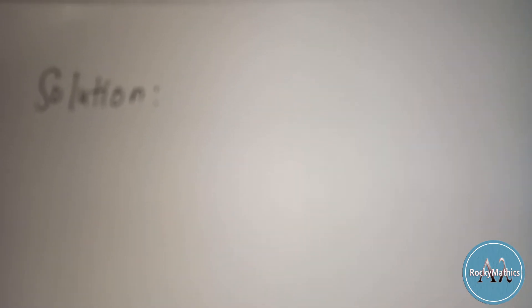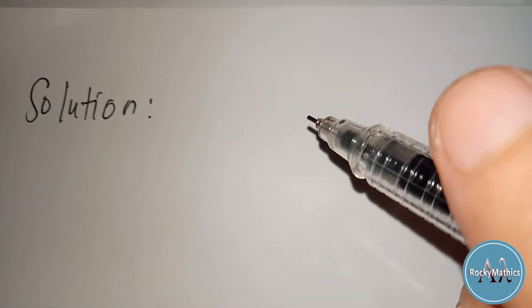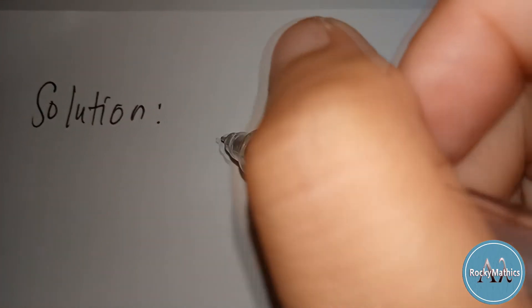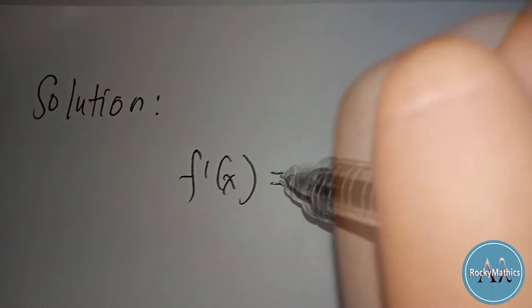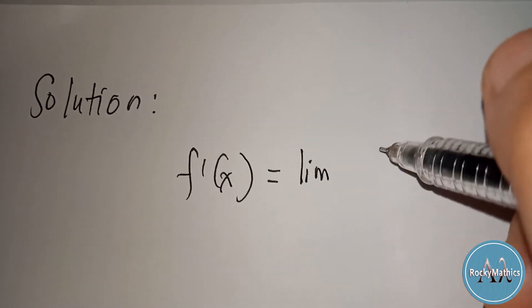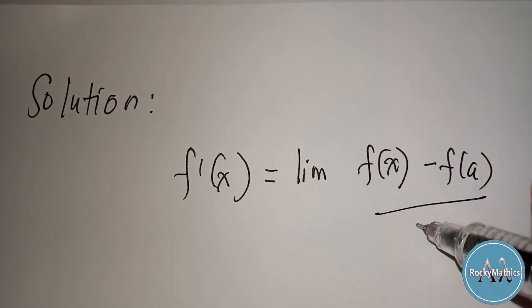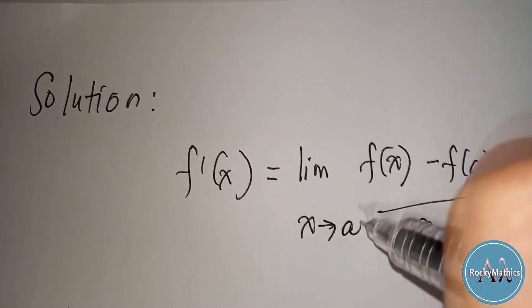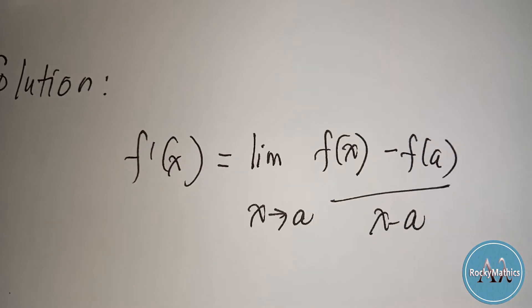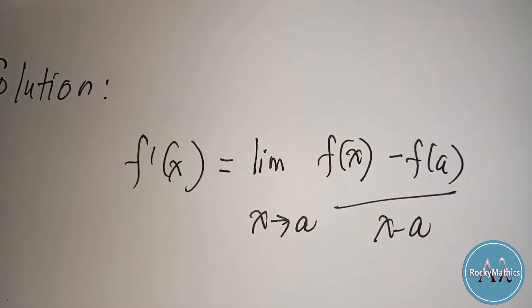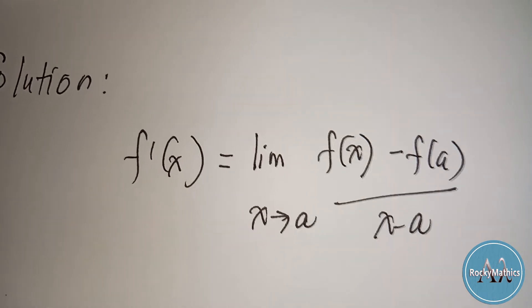That was the first formula for finding the derivative using the definition. Now we have the second formula: f prime of x is equal to the limit of [f(x) minus f(a)] over [x minus a], as x approaches a. We're going to use this second formula because it is easier compared to the first one.